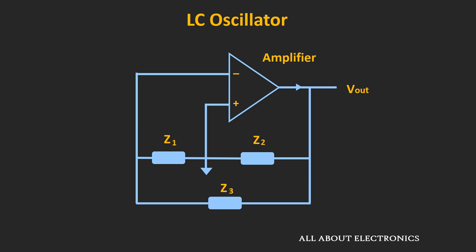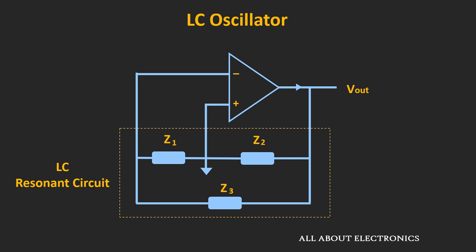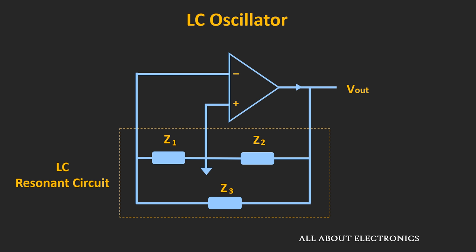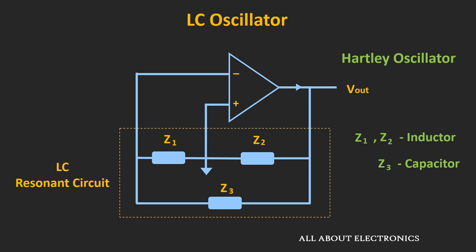In general, an LC oscillator circuit has three impedance elements. Depending on the type of elements, the LC oscillator can be classified into different categories. If Z1 and Z2 are capacitors and Z3 is an inductor, the configuration is known as the Colpitts oscillator. If Z1 and Z2 are inductors and Z3 is a capacitor, that configuration is known as the Hartley oscillator. In this video, we will focus on the Colpitts oscillator.